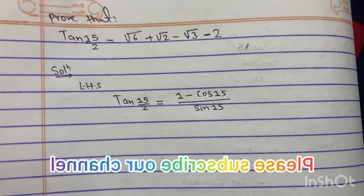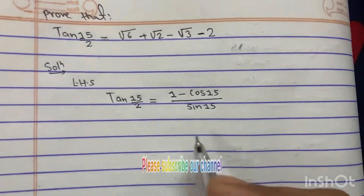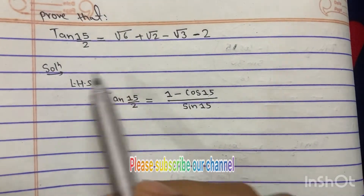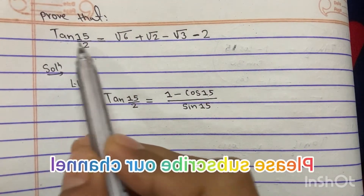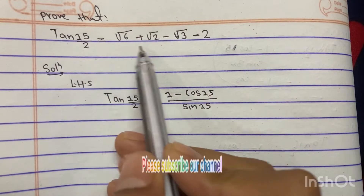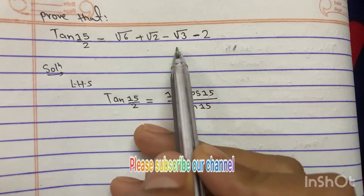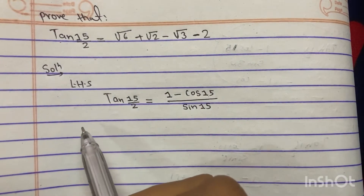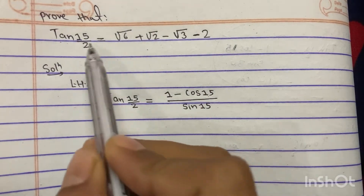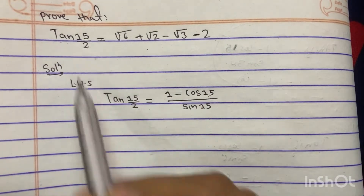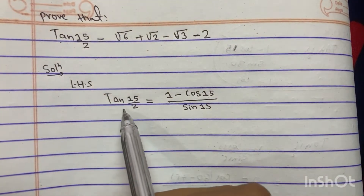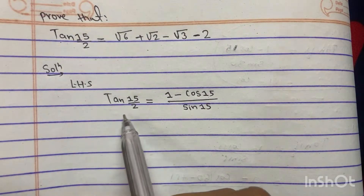Hello, today I have one numerical from trigonometry. The question is: tan(A/2) equals root 6 plus root 2 minus root 3 minus 2. To prove this, we take the LHS as tan(A/2).